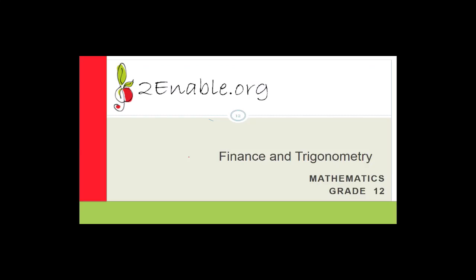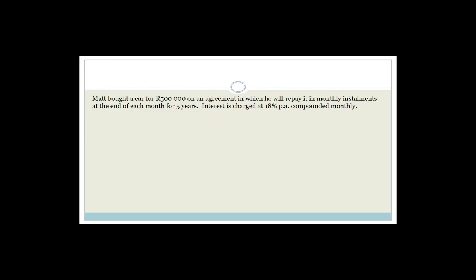Now let's get back to finance — and I've added trigonometry as well, so if we manage to get through our finance questions, we'll move on to some Grade 12 trigonometry. We got as far as talking about Matt, who bought a car for 500,000. We worked out his annual effective interest rate and his monthly instalments, which were R12,696.71.